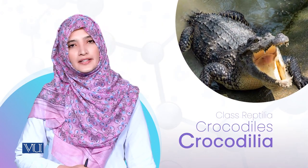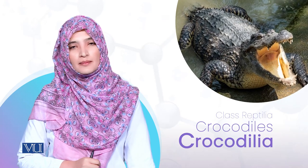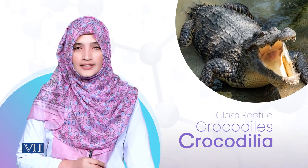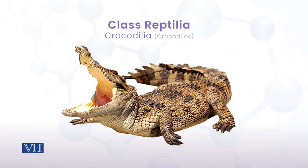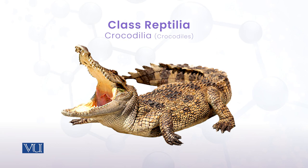اب ہم Order Crocodylia دیکھتے ہیں جس میں crocodiles اور alligators included ہیں۔ Picture میں دیکھ سکتے ہیں کہ crocodile کے powerful jaw opening کے ساتھ body بڑی hard اور dry نظر آتی ہے۔ اس کی distribution، habitat اور characteristics کے بارے میں discuss کرتے ہیں۔